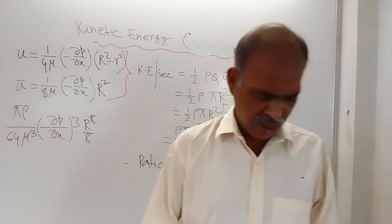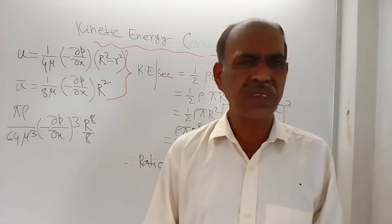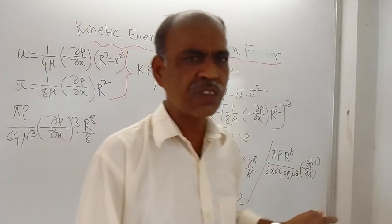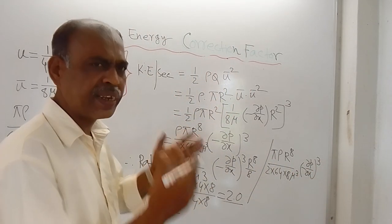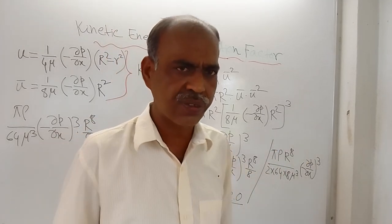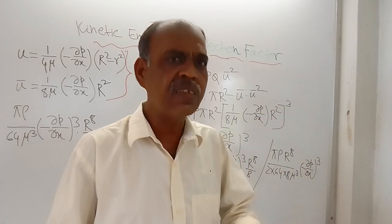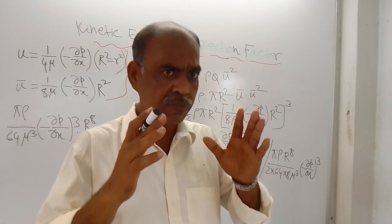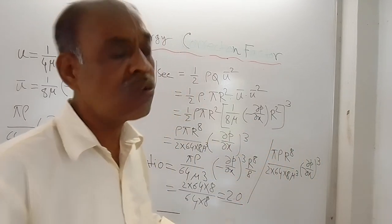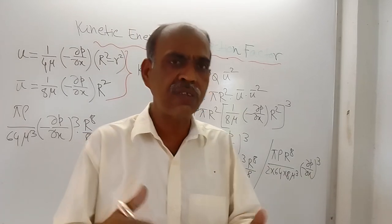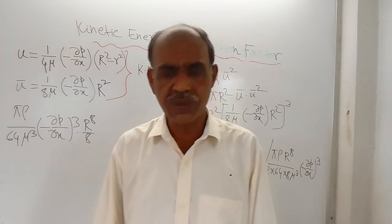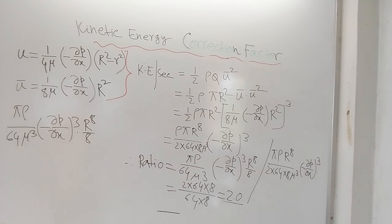This is the end of the video. The ratio of kinetic energy per second based on actual velocity to kinetic energy per second based on average velocity equals 2 for the case of laminar flow of viscous fluid through a pipe of circular cross section. This ratio is different for different cases. Thank you for watching, and I wish you all a very nice day.